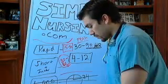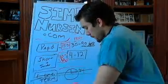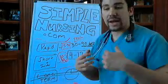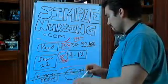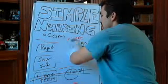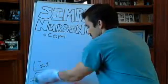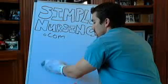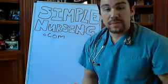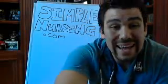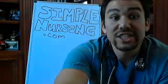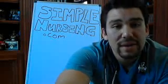Now let's talk real quick about DKA — diabetic ketoacidosis — and HHS, which I think stands for hyperglycemic hyperosmolarity syndrome. Let's talk about that real quick.